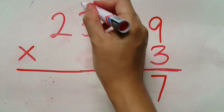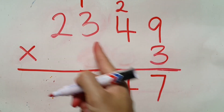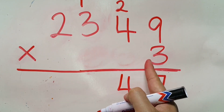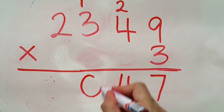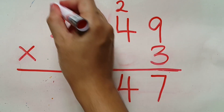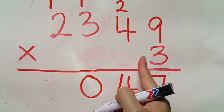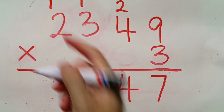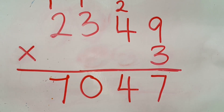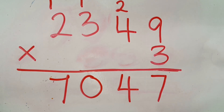Three times three will be nine, plus one on top gives ten: zero at the bottom, one carried to the top. Two times three will be six, plus one on top gives seven. So the total will be seven thousand and forty-seven.